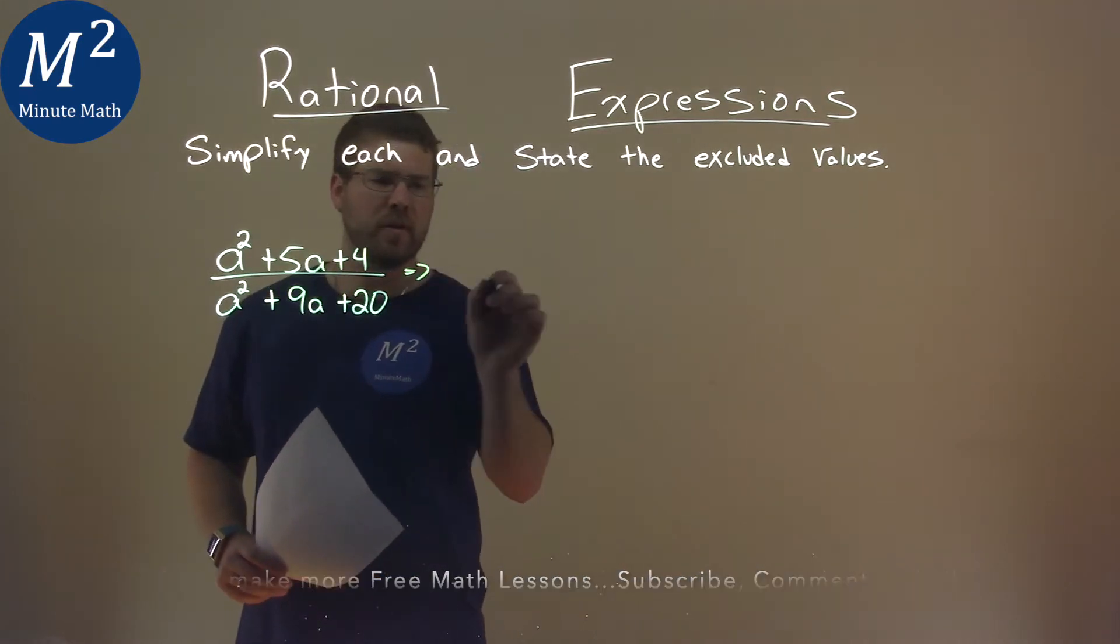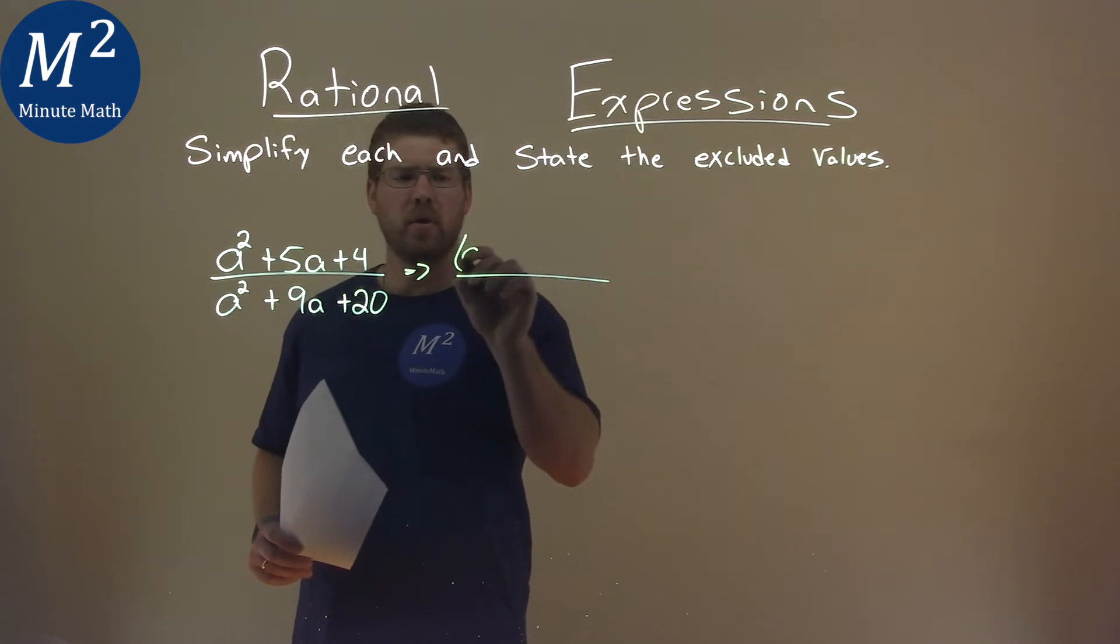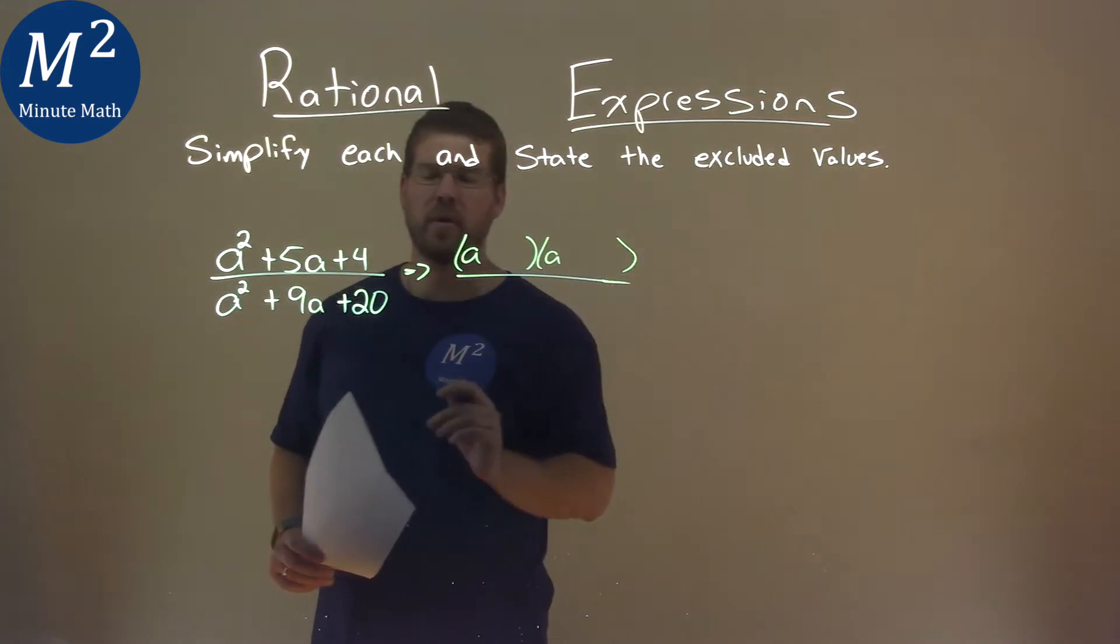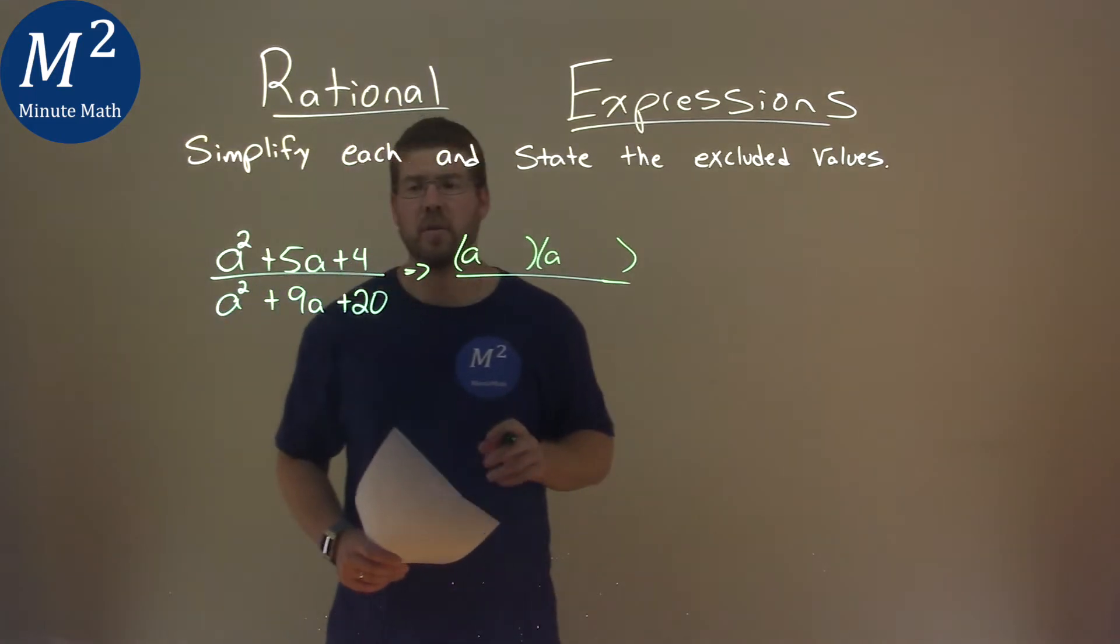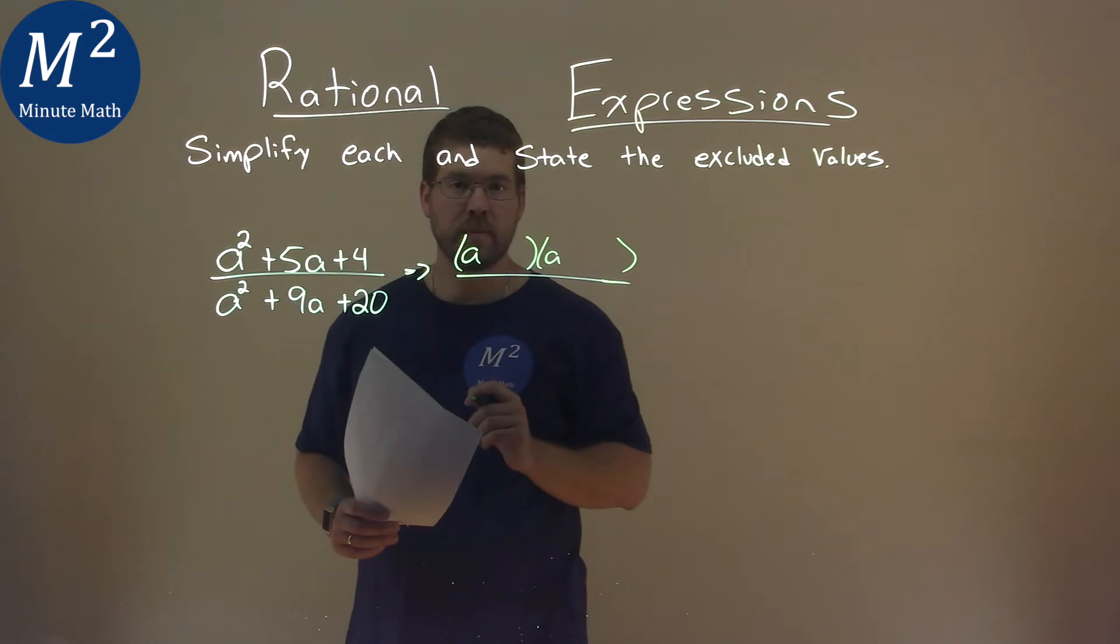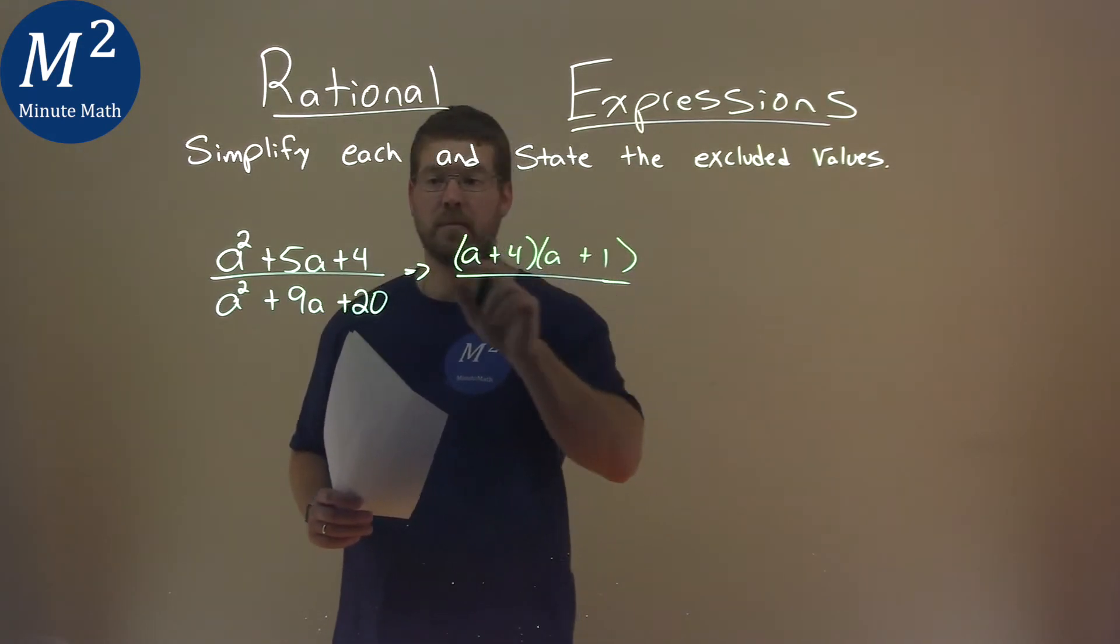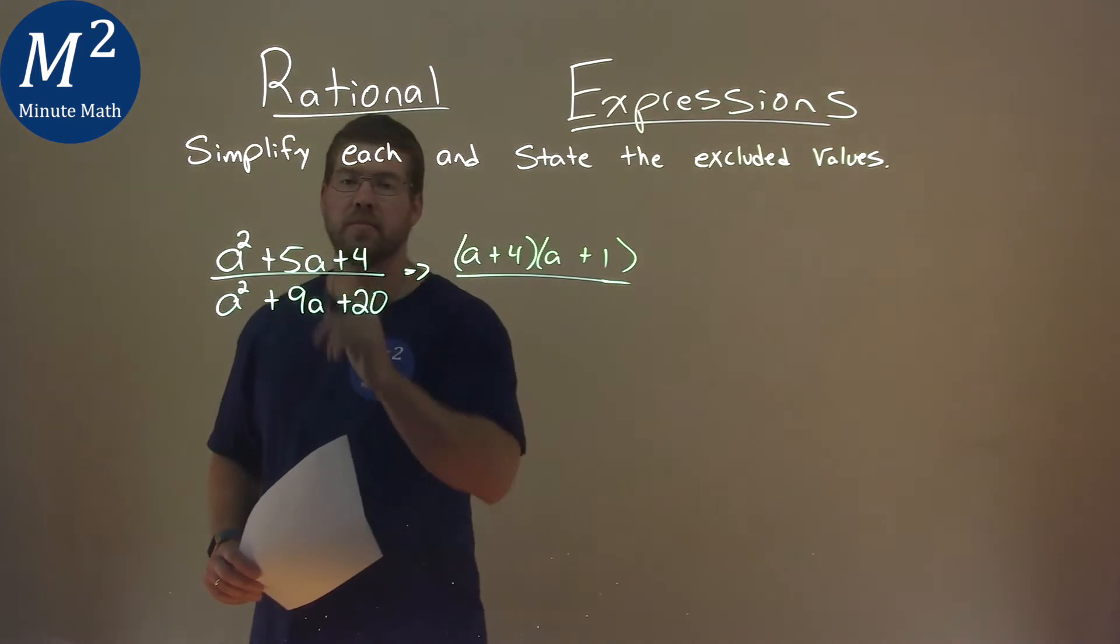First thing I want to do is factor the numerator. It has the form (a)(a) in the first part. We have to ask ourselves: what two numbers multiply to be 4 but add to be 5? That's going to be positive 4 and positive 1. 1 times 4 is 4, and when we add the two we get 5.